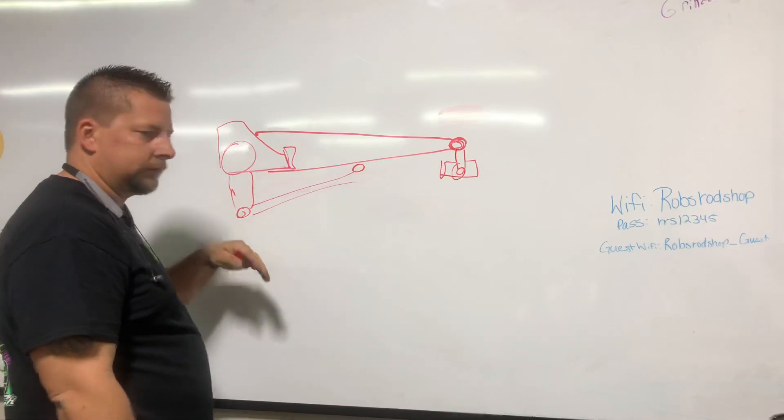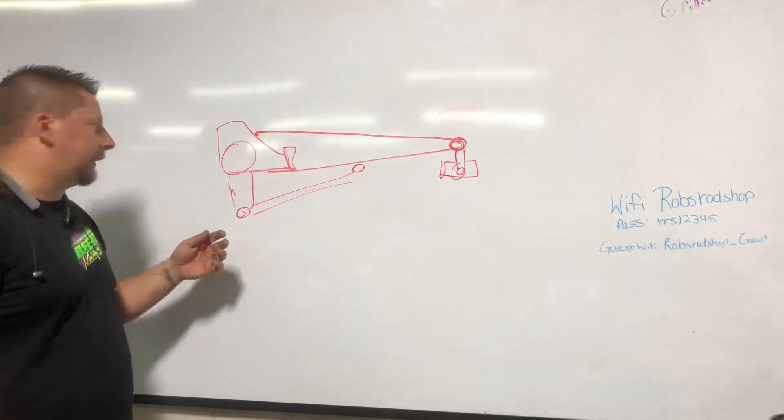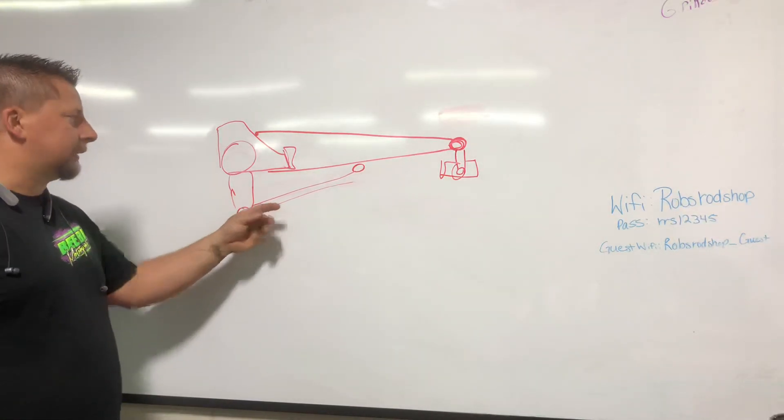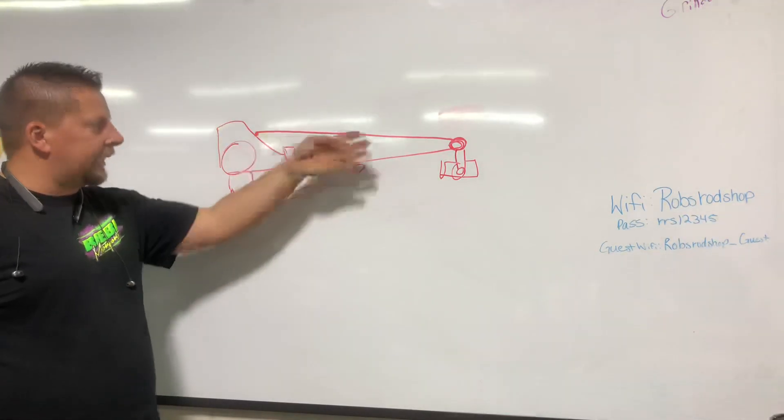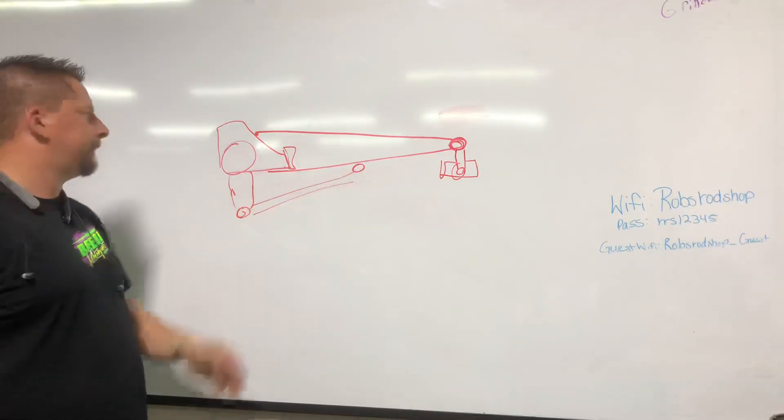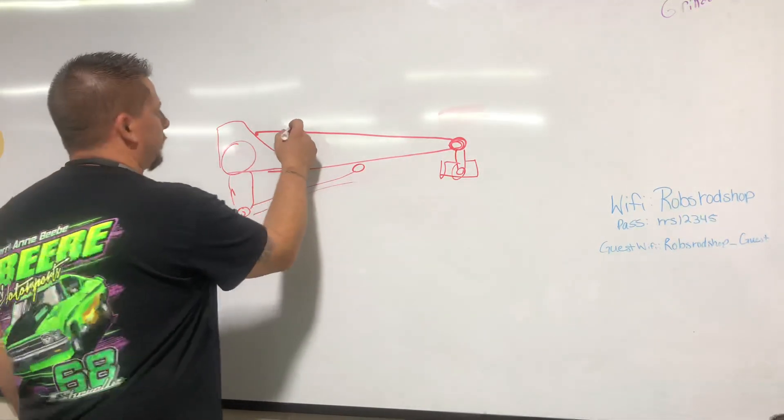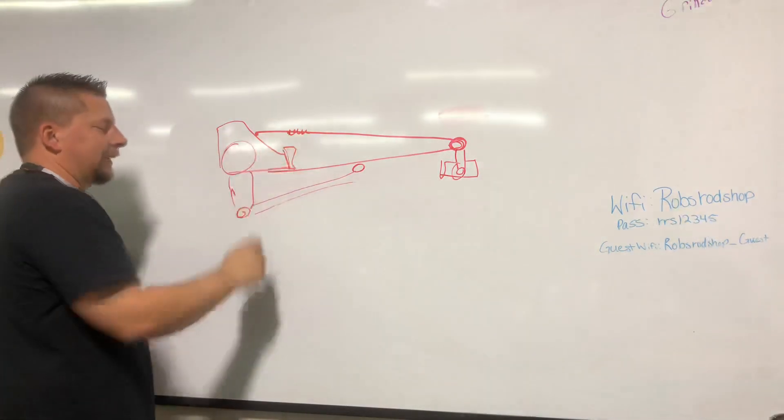The difference is, this is applying a set number of anti-squat itself that cannot be changed. The only thing you're going to use this torque arm for is generally there's an adjustment in the top part of it to set pinion angle. Once again, pinion angle does nothing except make the u-joints live, so make sure you adjust that thing properly for the drive shaft.